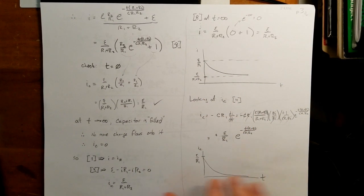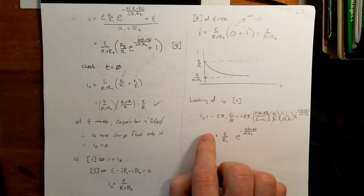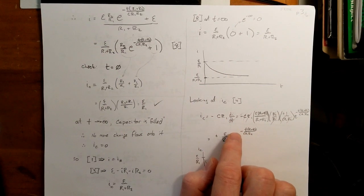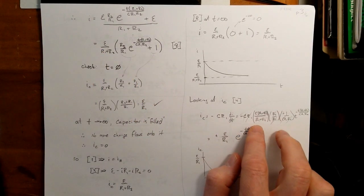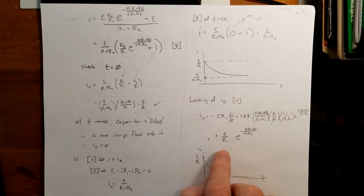If we want to see what the current flowing across the capacitor is, which is the equation for, we had I sub C is negative C R1 di dt. There's my equation for I right there, taking the derivative with respect to time. We get this. And ultimately, we simplify this down to this equation here, and so this is what the current flowing across the capacitor would look like.